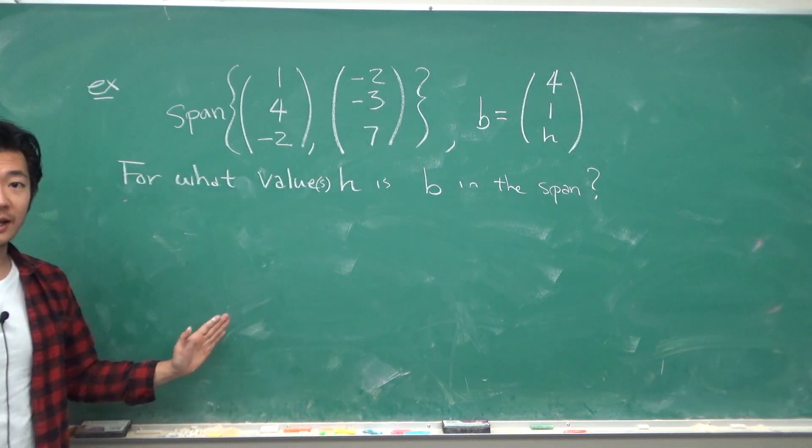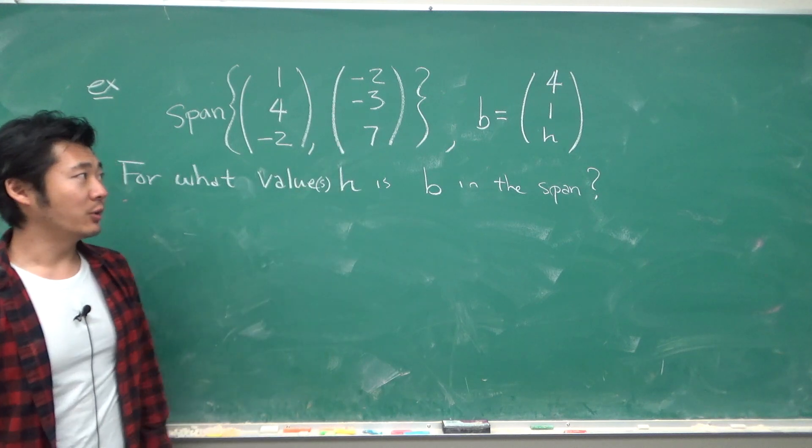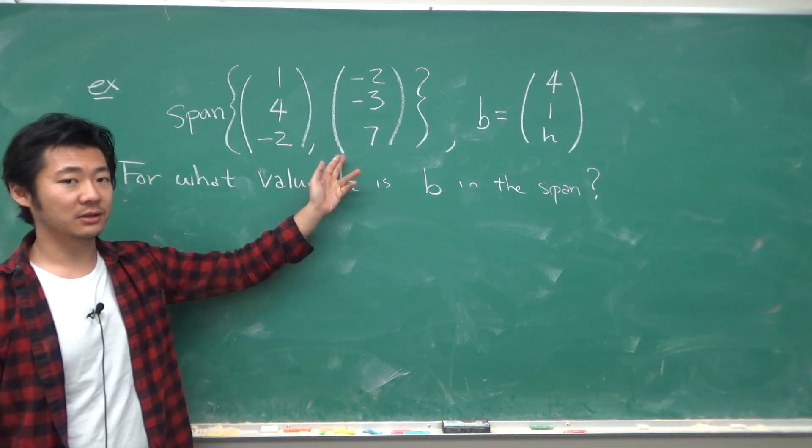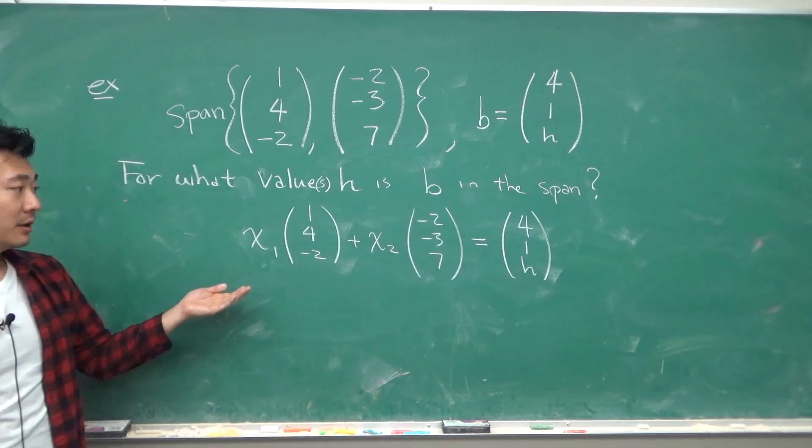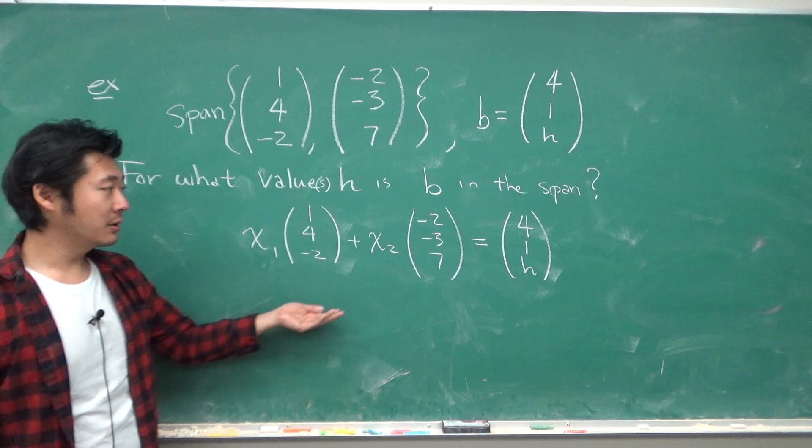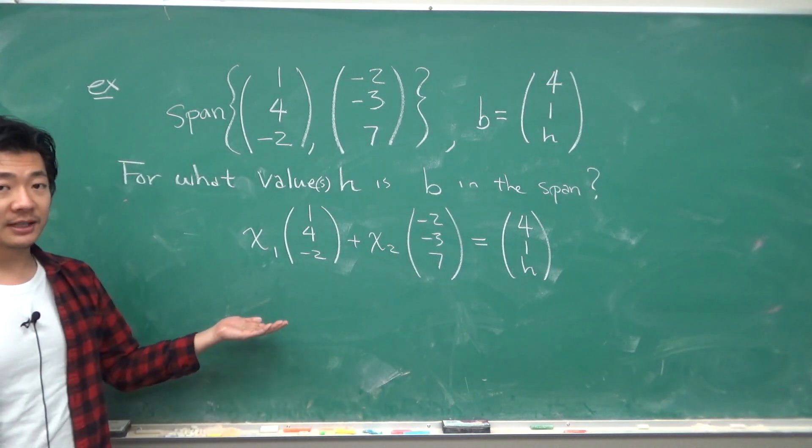So what is this really saying? Well, to be in the span of these two vectors, we need to be able to write b as a linear combination of these two vectors. So let's write that out. So this is a linear combination of the vector 1, 4, negative 2, and negative 2, negative 3, 7. And we want to know if this has a solution.